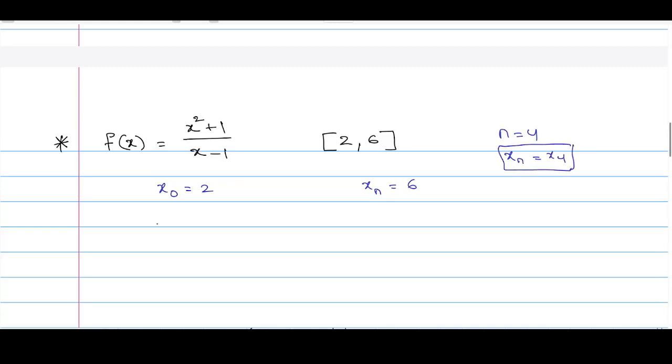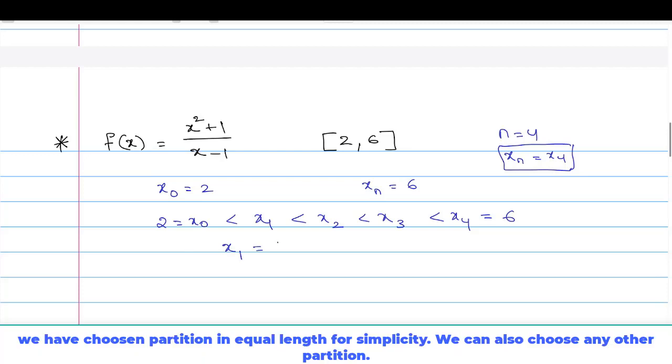We can divide our interval into sub-intervals like this: x 0 equals 2, which will be less than x 1, less than x 2, less than x 3, less than x 4, which will be 6. As we can see, x 0 is 2 and x 4 is 6. Then I can clearly see that x 1 is 3, x 2 is 4, and x 3 is 5.